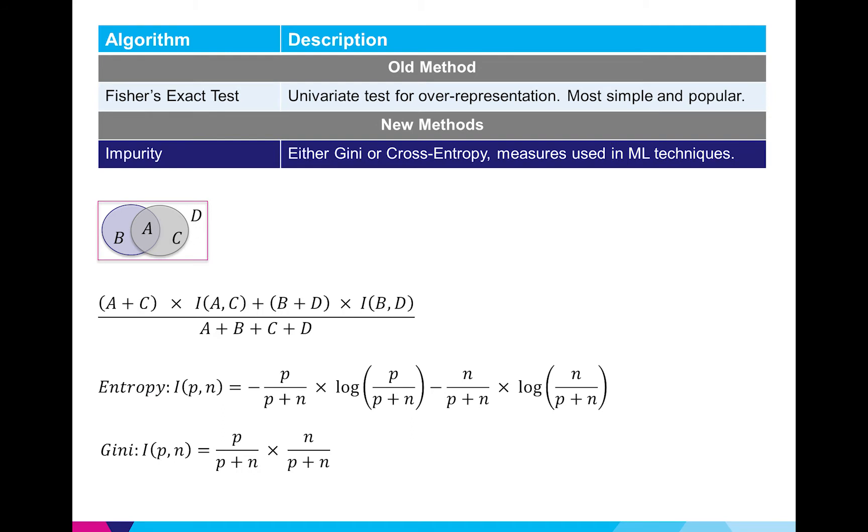The first new method I looked at are impurity scores and these come from the domain of machine learning. The inputs are actually the same as Fisher's but they're just different formulas.